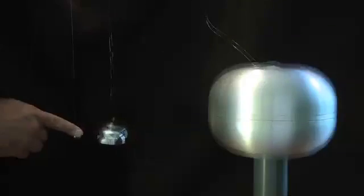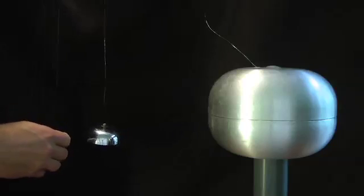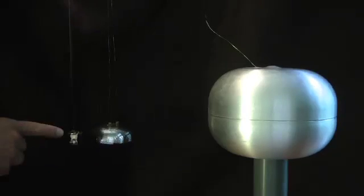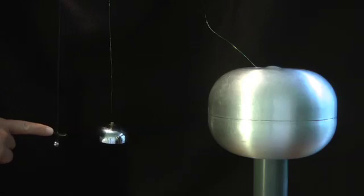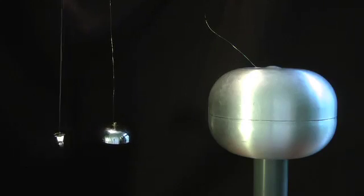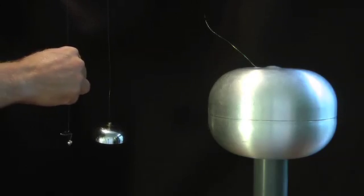I've duplicated this concept using a Van de Graaff generator to charge my bell and my hand to be the grounded object. The clapper in the middle is first attracted to the charged bell, but when it touches the bell, the clapper becomes charged itself and is then repelled by the bell until it touches my hand and loses its charge.